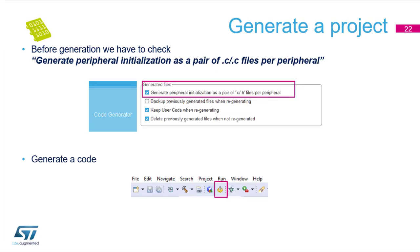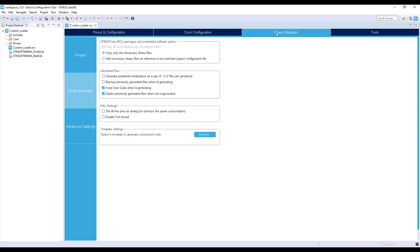If we have all Quad SPI parameters filled in, we should generate the project. Before generation, we have to enable the checkbox 'Generate peripheral initialization as a pair of C and header files', because we want to create separate Quad SPI drivers in a quadspi.c file. After that, we can generate the code with the code generation button. For more information, please visit the project website.